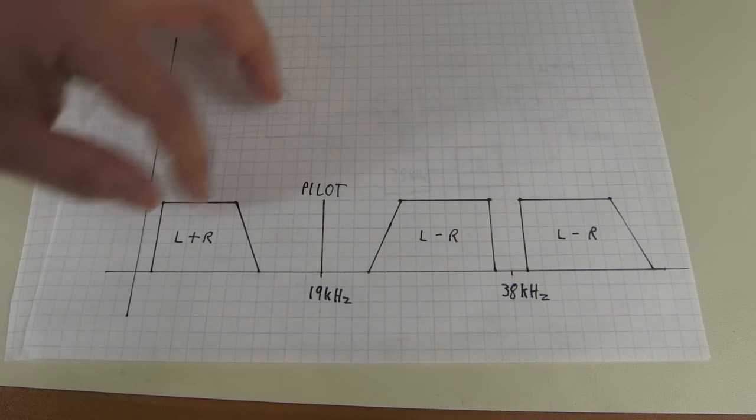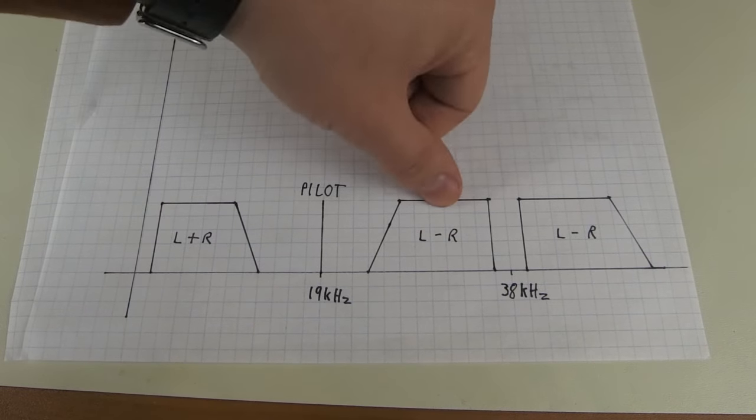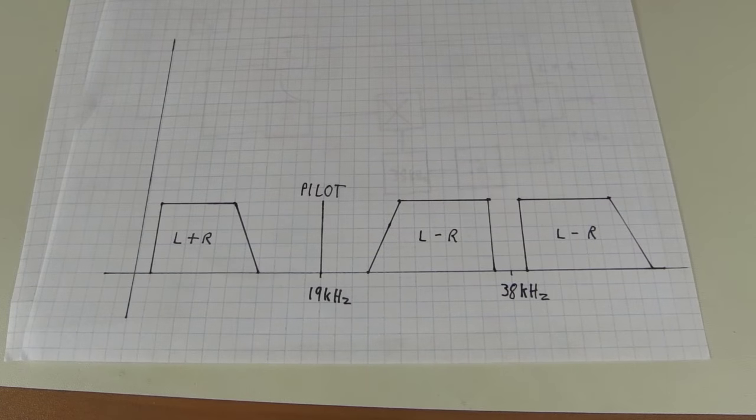And it'll then either add or subtract the left plus right and the left minus right to get the left or right channels. All right. That is it. That is the theory.